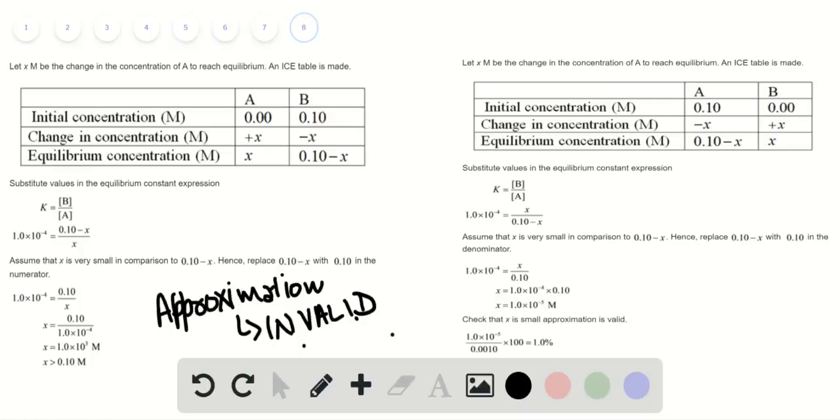Assuming that x is very small. In this case, the x turns out to be 1.0 into 10 raised to power negative 5. We check that x is very small in approximation that is about 1%. Since 1% is less than 5%, the approximation in this case is valid.